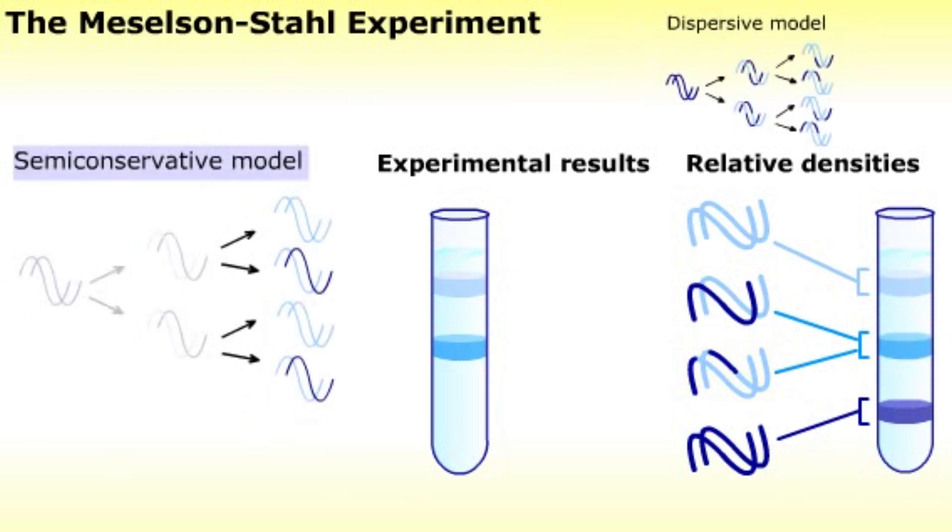The semi-conservative model predicts that the second round of replication will yield two DNA molecules composed of only light nitrogen, and two molecules composed of one heavy and one light strand. Since Meselson and Stahl got one band corresponding to the light DNA only, and one band for the combination of heavy and light, the semi-conservative model is correct.